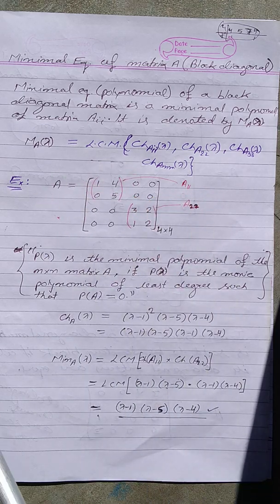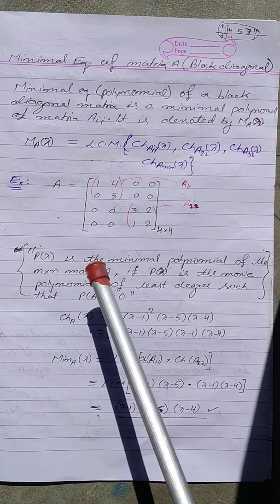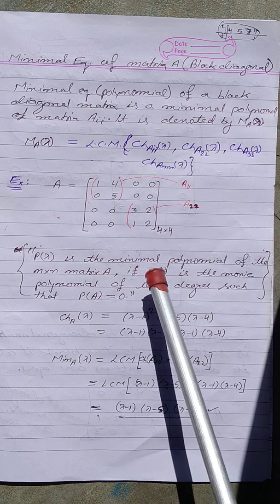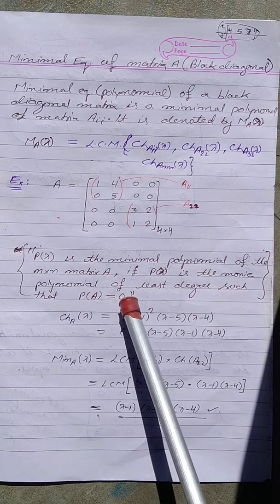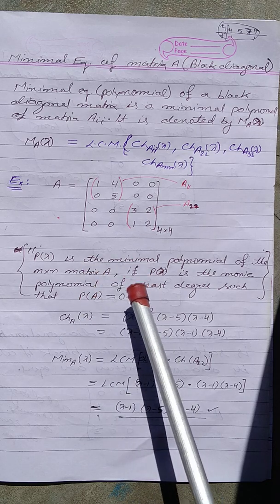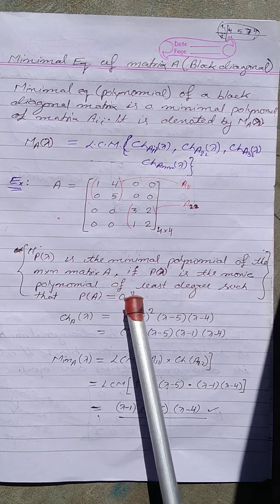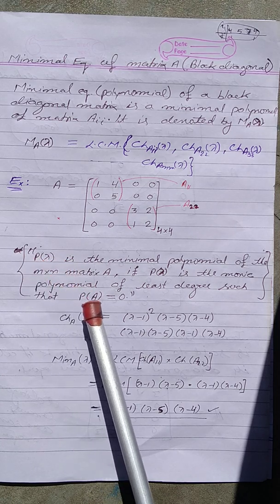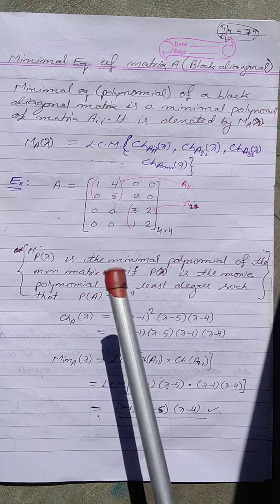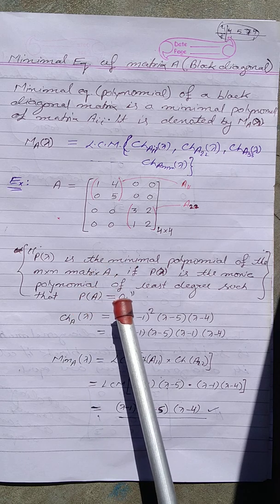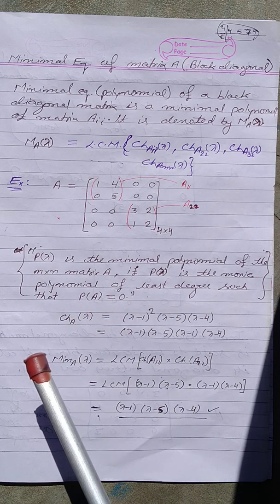By definition, the minimal polynomial p(λ) of an n×n matrix A is the monic polynomial of least degree such that p(A) = 0. This means if we substitute the matrix A in place of λ in p(λ), the result is the zero matrix. This is the definition and process for finding the minimal polynomial of a block diagonal matrix.